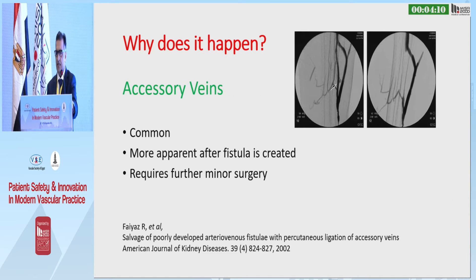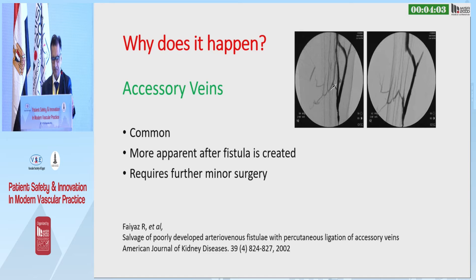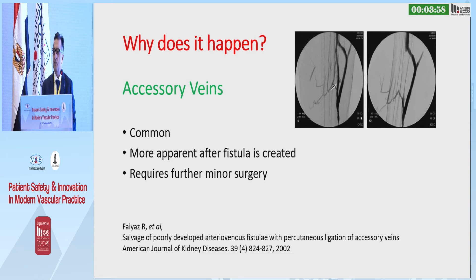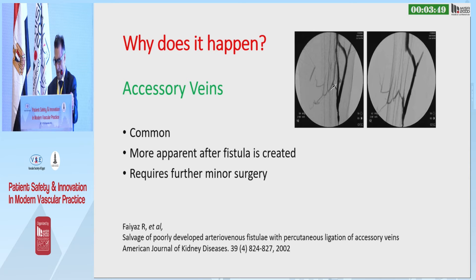Accessory veins. Sometimes they're not apparent preoperatively unless you've done a very detailed duplex scan. Often they come to light once the fistula has been created. The best thing to do is identify these and tie off the ones causing steal away from the main body of the vein, which will improve blood flow and hopefully maturation.